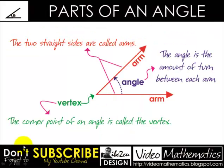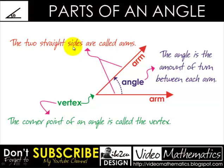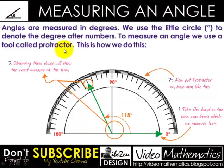If we talk about parts of an angle, these are the arms and this is the vertex. By definition, the two straight sides are called arms, and the angle is the amount of turn between each arm about the vertex. The corner point of an angle is called the vertex.